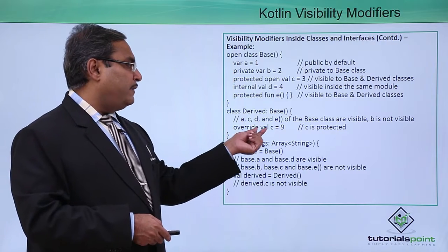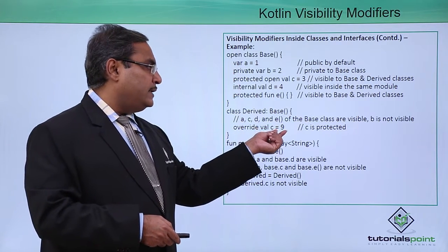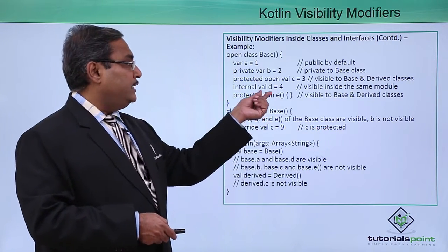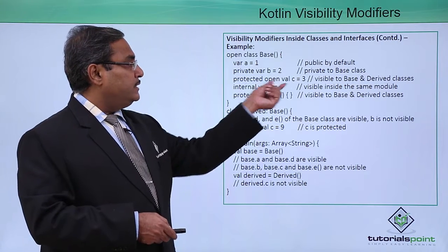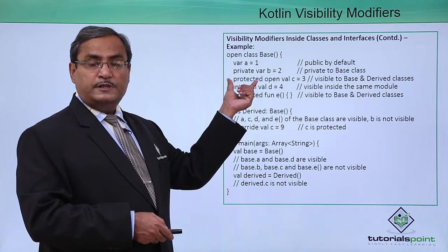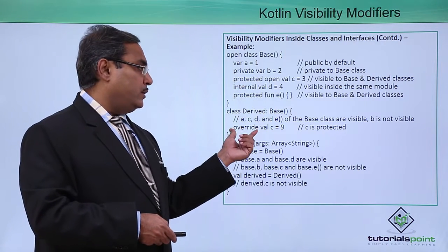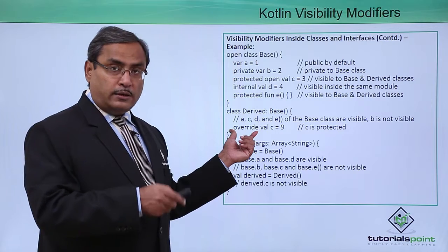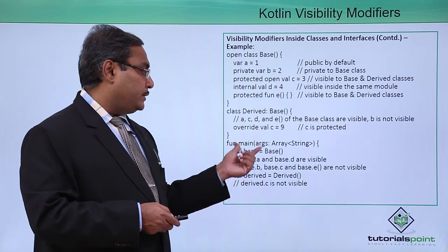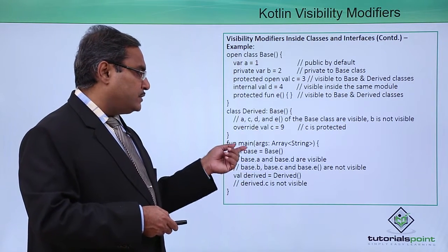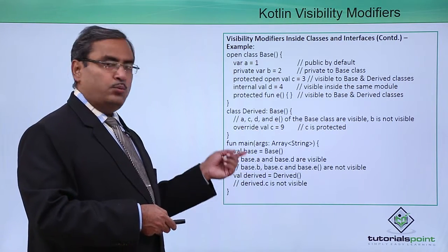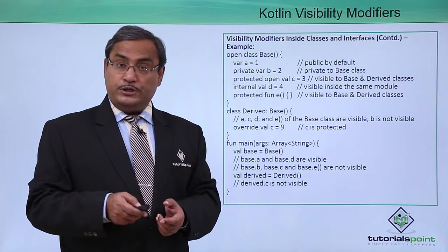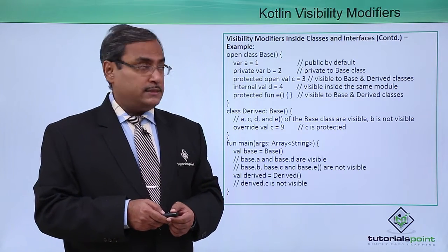In the derived class, 'override val c = 9' — c remains protected here because initially c was declared with the protected visibility modifier, so it carries that modifier in the derived class as well. In the main function, we have written which members can be accessed and which cannot.